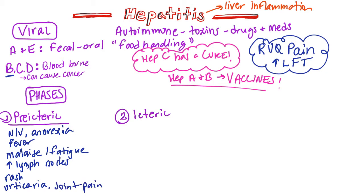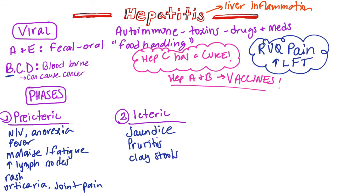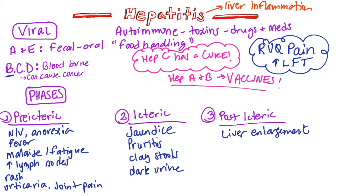In the second phase, jaundice will begin to appear, and that is called the icteric phase. When jaundice appears, we're also going to have pruritus — an accumulation of bile salts under the skin which makes them itch — as well as clay-colored stool and dark urine. In phase three, the post-icteric phase, the jaundice begins to subside. There is liver enlargement, and the liver function tests return to normal.